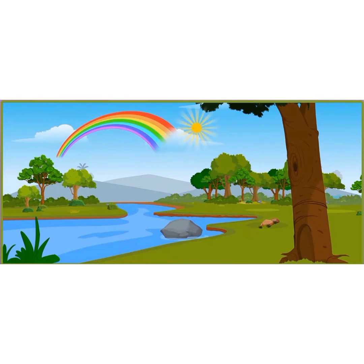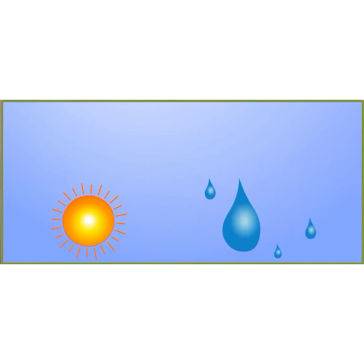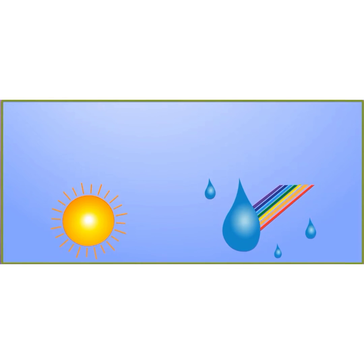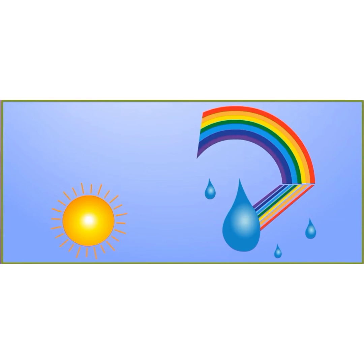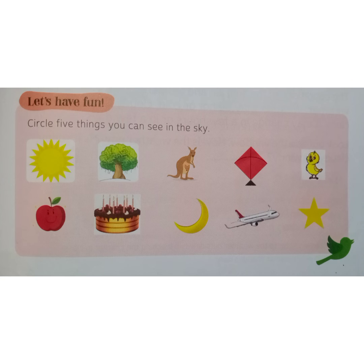The rainbow consists of seven colors. Whenever the sun shines, the water droplets disperse the light and a beautiful rainbow is formed. Now let's move on to the exercise. In your book, try to circle the things which we can see in the sky.